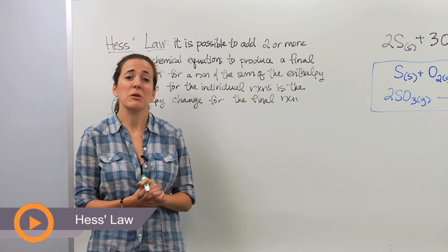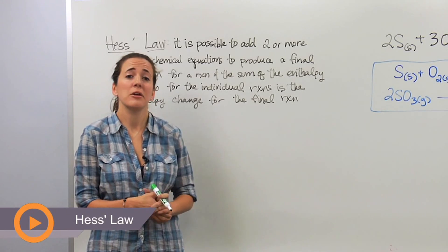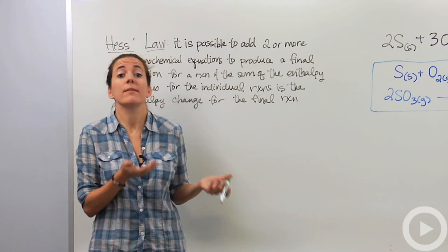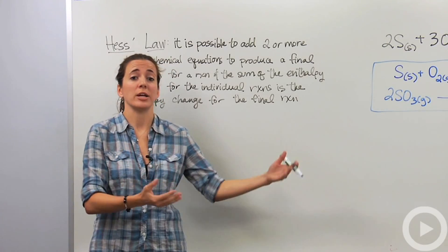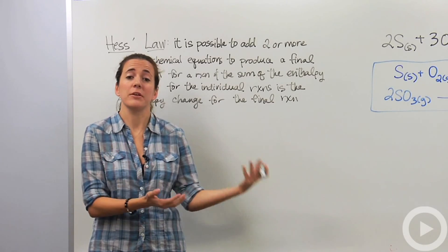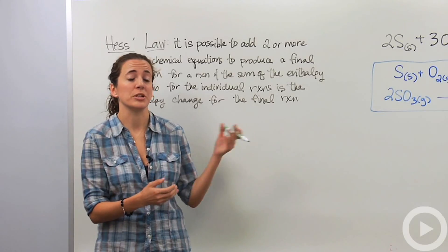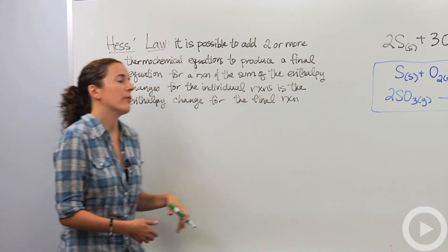Alright, sometimes when you're dealing with thermochemical equations, you might not know the delta H of your reaction. So there are different ways you can go about getting the delta H of the reaction. You can actually do the reaction itself and use a calorimeter and figure out the delta H, or you can actually use other reactions that might add up to a particular reaction. What does that mean?